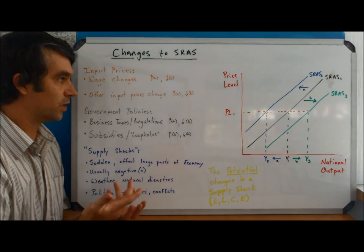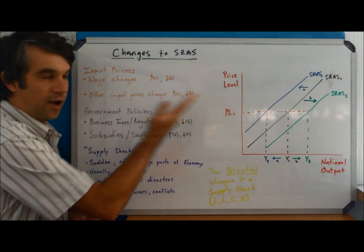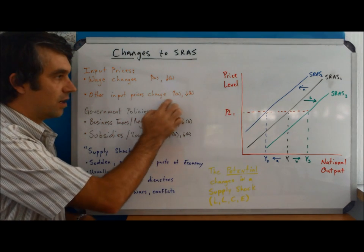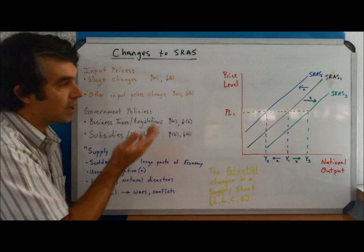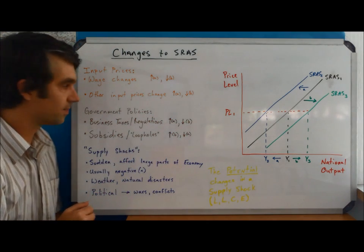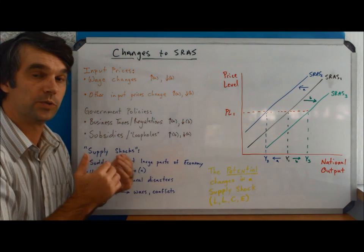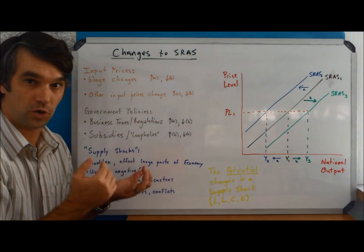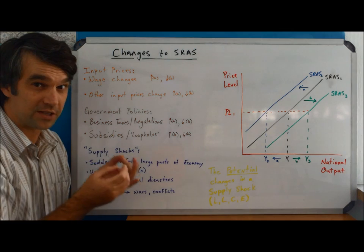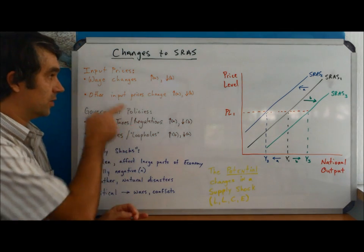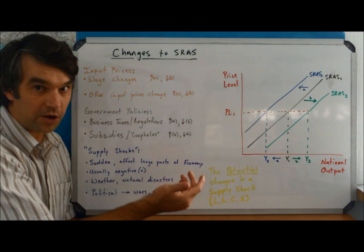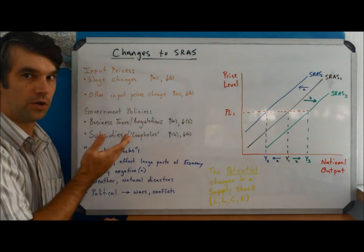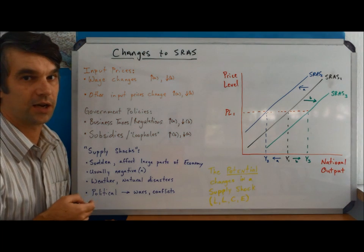If those inputs become more expensive, aggregate supply is going to shift to the left. If they become less expensive, we're going to see a shift to the right. Keep in mind the distinction we made between short run and long run. Short run was when the input prices are constant. As soon as they're not constant, if they change, it doesn't make it the long run, it makes it a new short run. We'll talk more about that distinction later on.